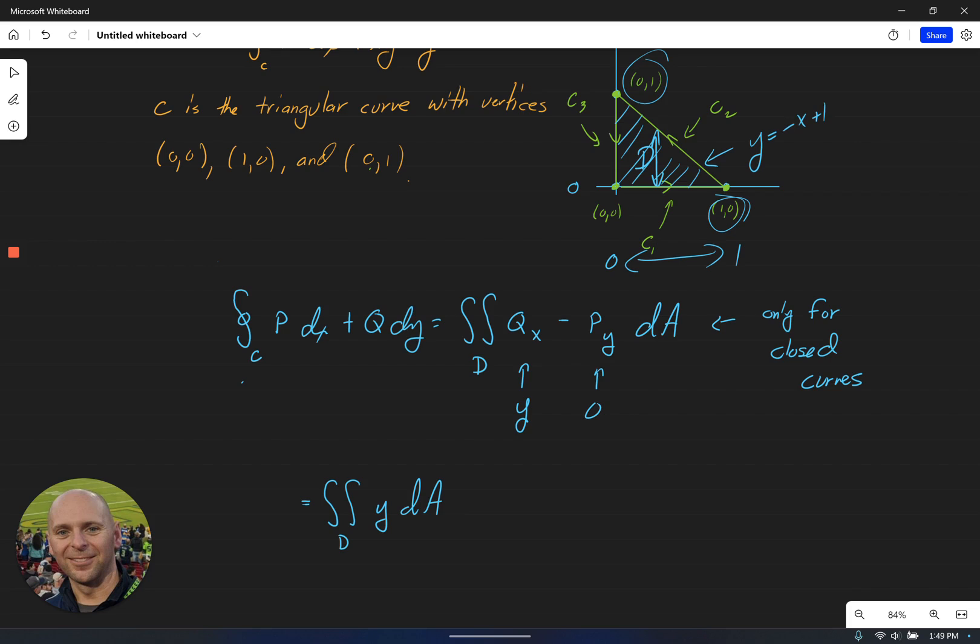So now we've got our region D where y is bounded between zero and one minus x and x is bounded between zero and one.